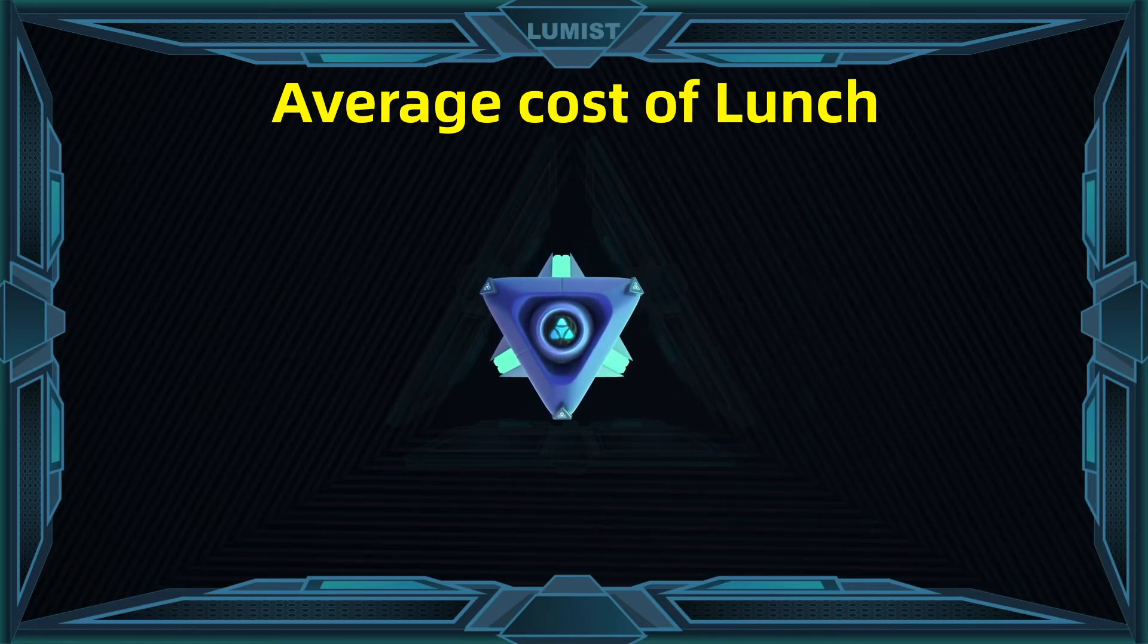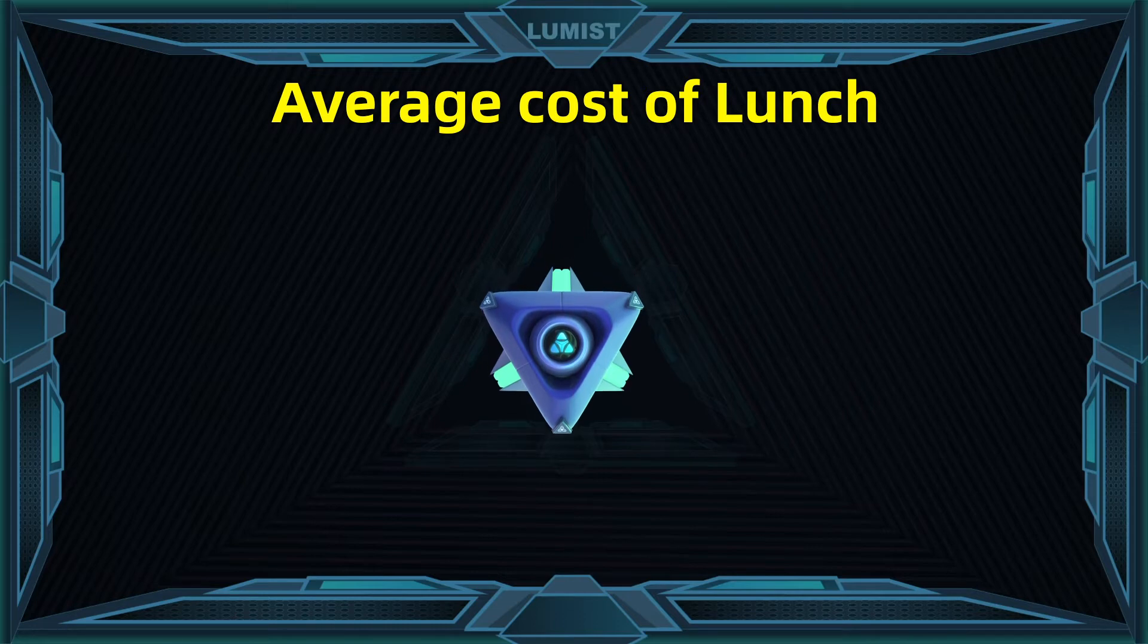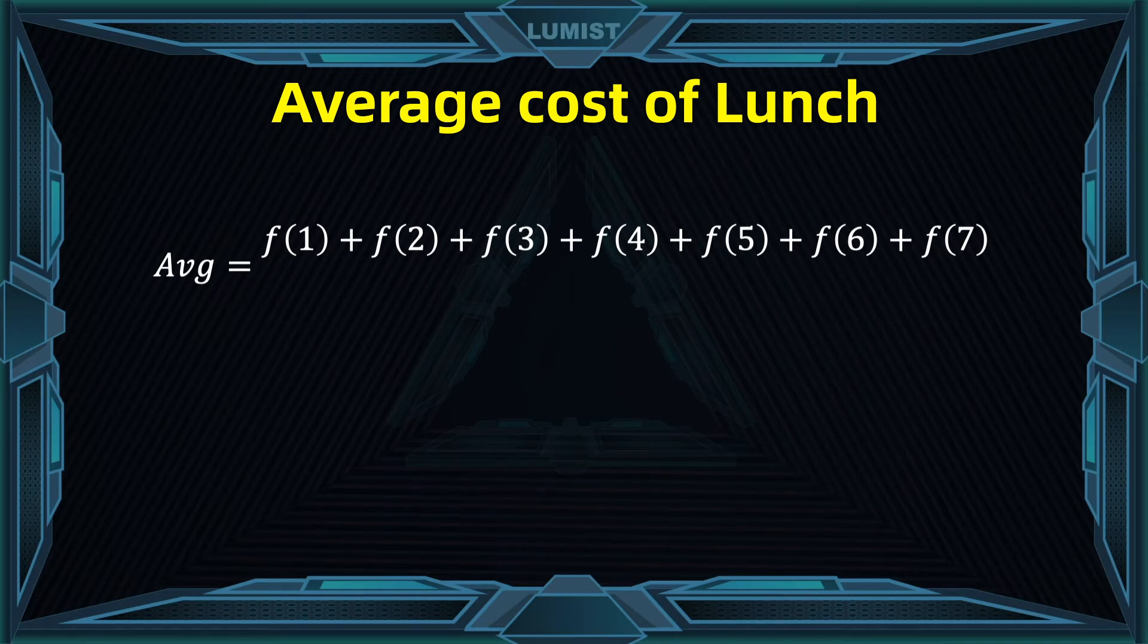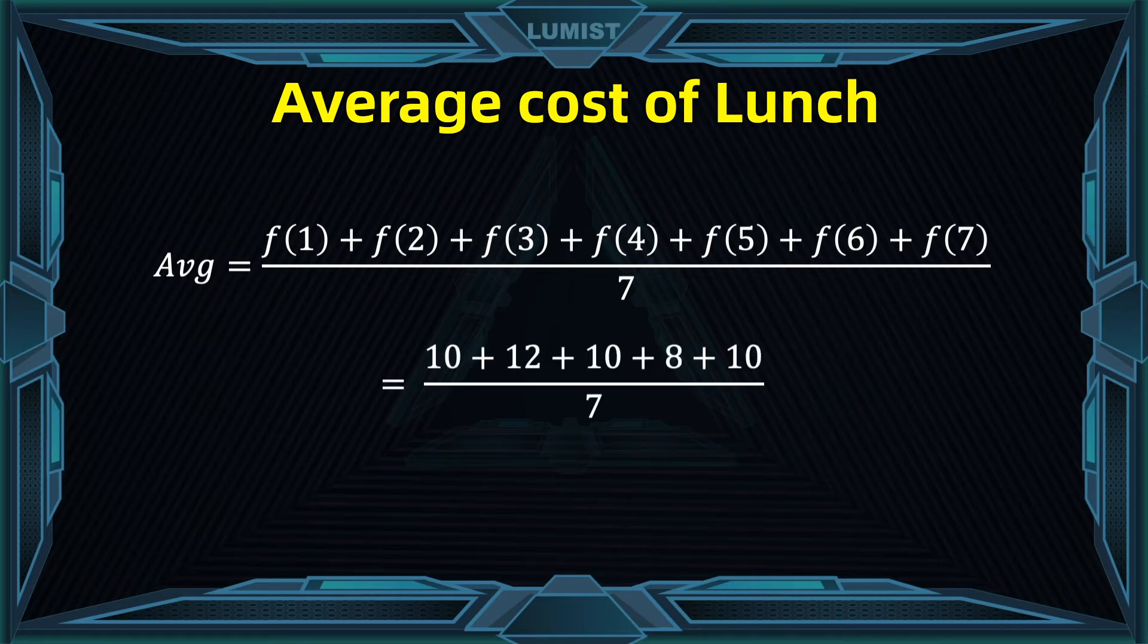Now we can represent our data using this new function. The average cost of lunch is going to be the sum of f at 1 plus f of 2 plus f of 3 all the way up to f of 7, and now we divide by the number of days which is 7. This gives us the average cost of lunch for whatever week of the year we want. By the way we defined our function f, we obtain the value we obtained at the beginning: 10 plus 12 plus 10 plus 8 plus 10 divided by 7. The average cost of lunch did not change for that specific week.